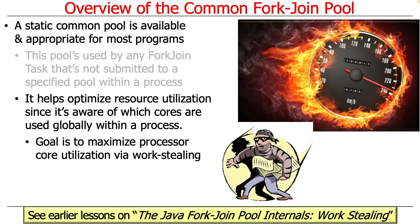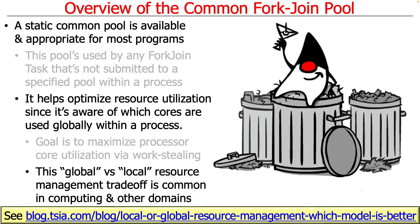We use work stealing to peg the performance meter as high as we possibly can — keeping all the cores doing something useful. This trade-off between global and local resource management is very common across many domains. For example, in Java with the heap: you've got a global heap where all memory comes from, managed globally, giving the garbage collector the ability to know all the memory that's allocated so it can do a more effective job. C++ allows you to take control over allocation using local data stores instead of the global free store.